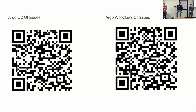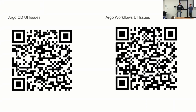Question: has there been any consideration of expanding the functionality of Argo Rollouts to more resource types? For example, being able to use analysis template metrics to roll back a new DaemonSet based on the metrics it generates? The question is restated as: are there any plans for Argo Rollouts to support resources beyond just deployments? Jesse is coming to answer.